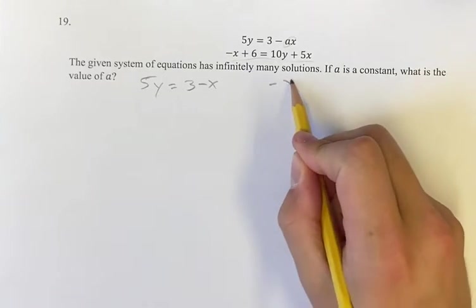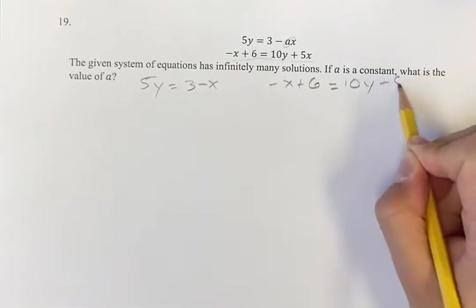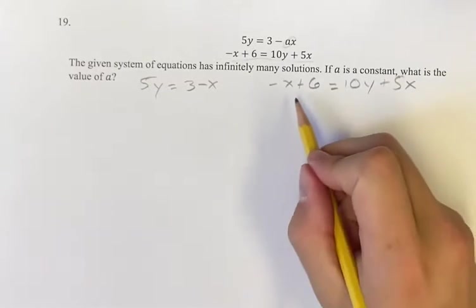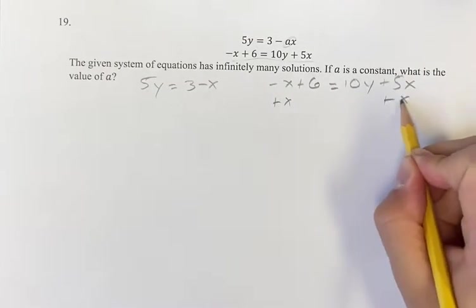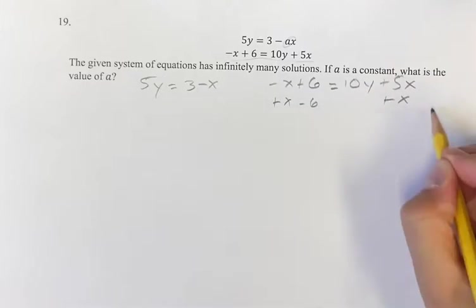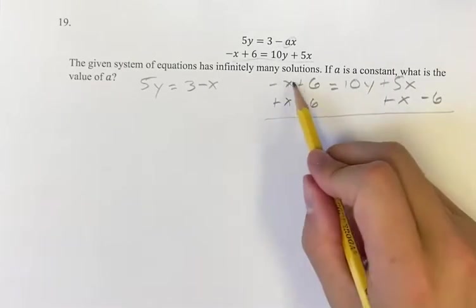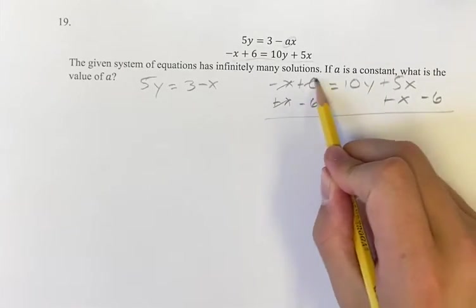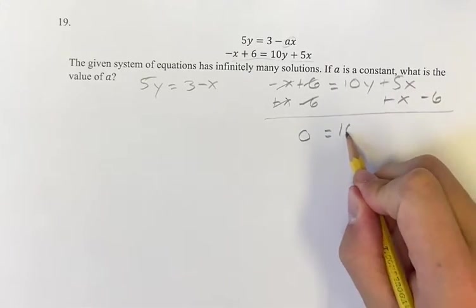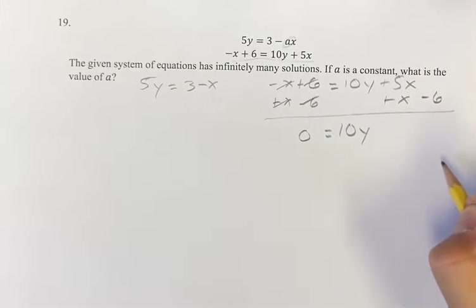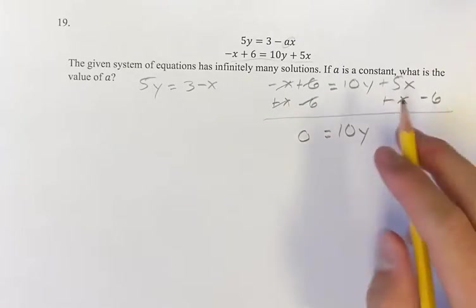So negative x plus 6 is equal to 10y plus 5x. We're adding x to both sides and subtracting 6 from both sides. Over here we're just going to have 0 for now. Here we have 10y, and we want to get it in this order, so let's put the negative 6 first.